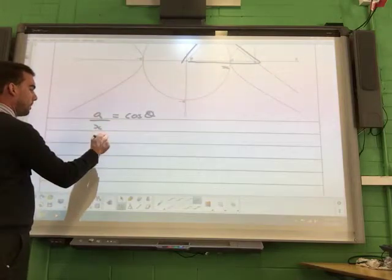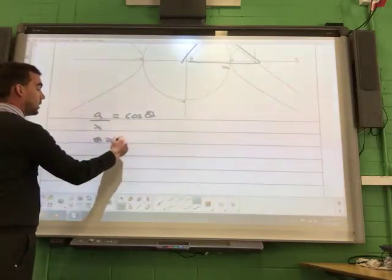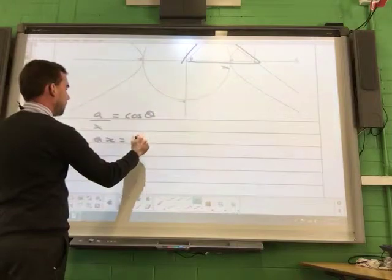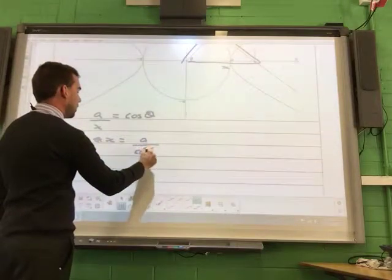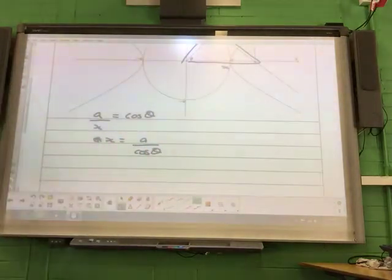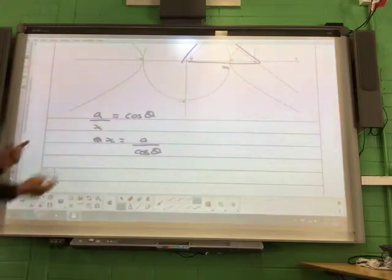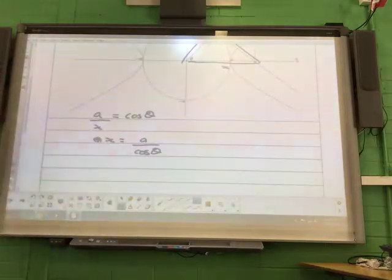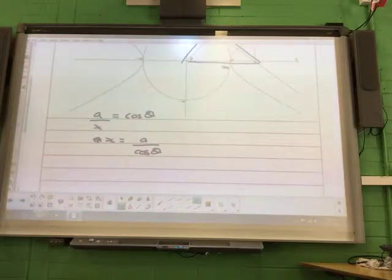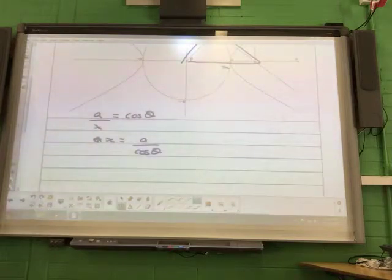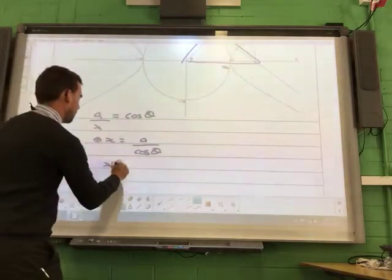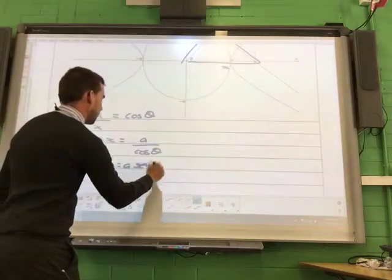You've got your adjacent and hypotenuse for cos theta. So x is going to be a over cos theta. Swap them to here. And what's the reciprocal for cos? That's secant. Third letter, remember? So x is A times sec of theta.